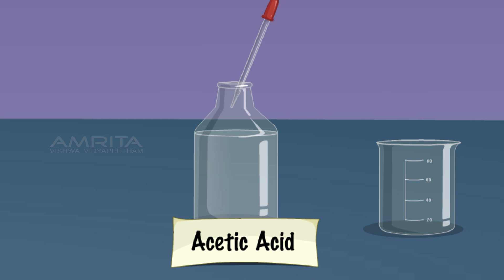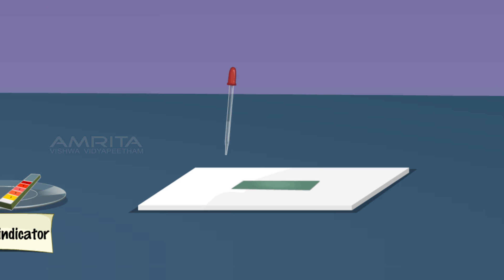Take a small quantity of acetic acid using a dropper. Pour one drop of acetic acid on the pH paper.